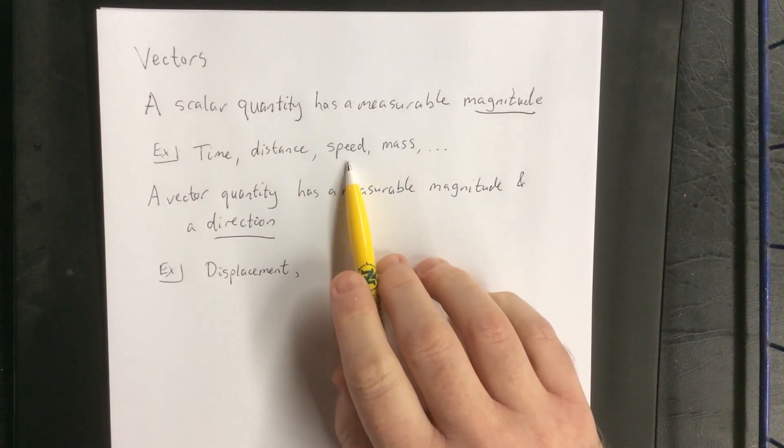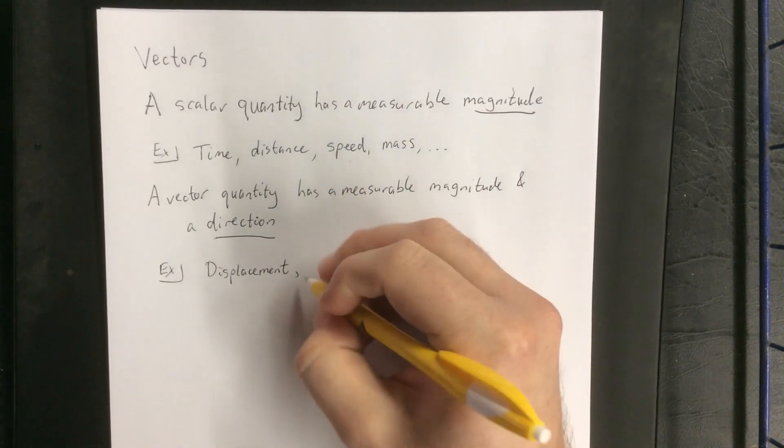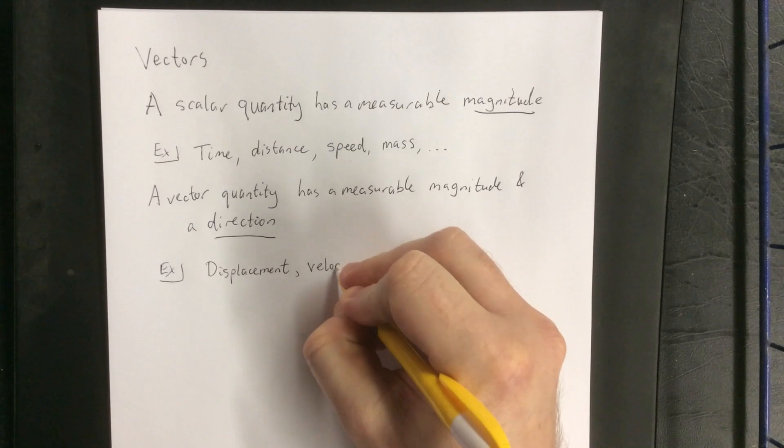I mentioned that I was walking at about 3 miles per hour. As soon as I attach a direction to that, I have what's known as a velocity.